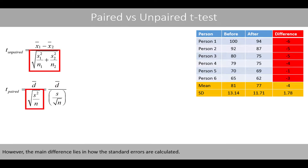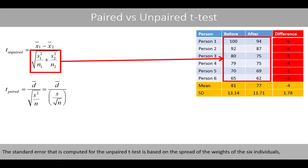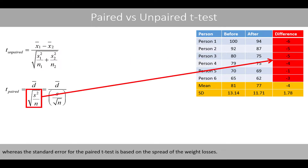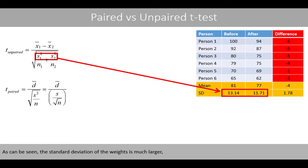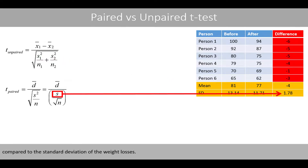However, the main difference lies in how the standard error is calculated. The standard error computed for the unpaired t-test is based on the spread of the weights of the six individuals, whereas the standard error for the paired t-test is based on the spread of the weight losses. As can be seen, the standard deviation of the weights is much larger compared to the standard deviation of the weight losses.